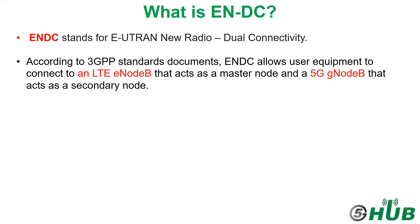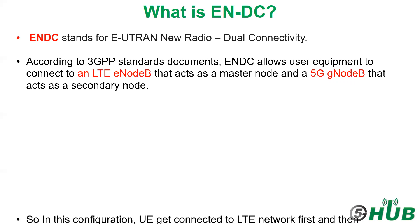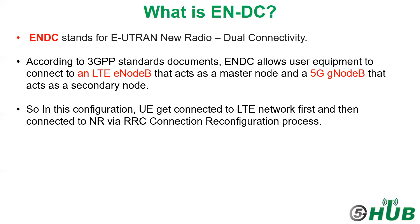According to 3GPP standards, EN-DC or EUTRAN New Radio dual connectivity allows the user equipment to connect to an LTE eNodeB that acts as a master node and a 5G gNodeB that acts as a secondary node. The user equipment connected to the eNodeB master node will first access LTE as the network for initial access and then will be connected to the 5G gNodeB or NR by an RRC connection reconfiguration process.